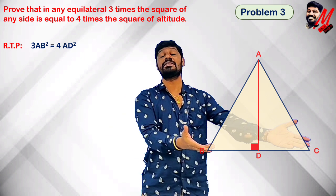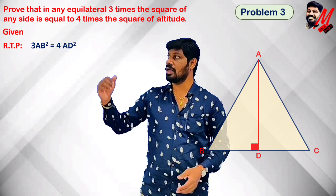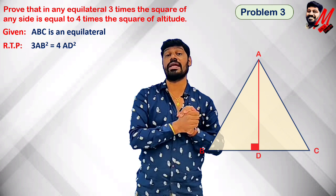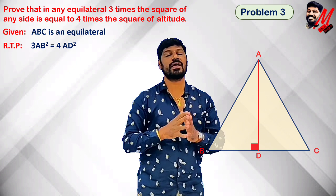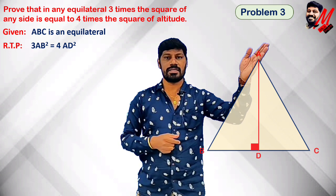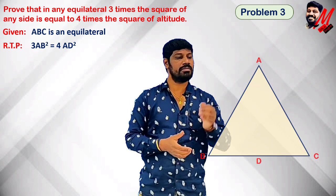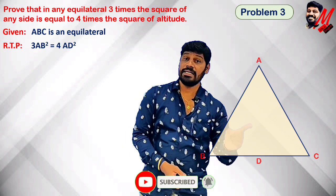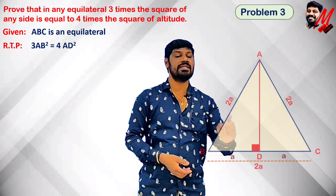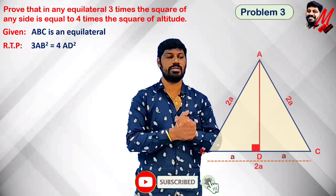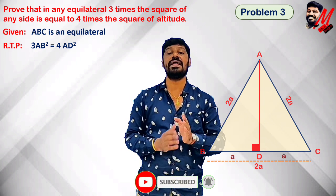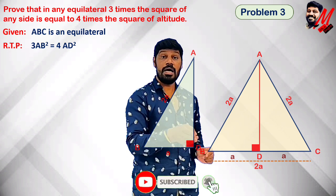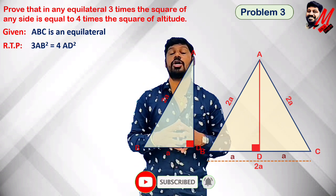So given: ABC is an equilateral triangle. To prove: 3×AB² = 4×AD². For calculation convenience, let us suppose the side equals 2a. So side 2a is equal to BC. D is the midpoint of BC, so BD = a and DC = a. In triangle ADB, angle ADB = 90 degrees because AD is the altitude.